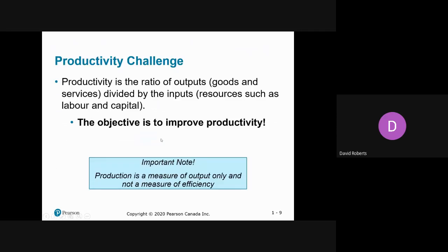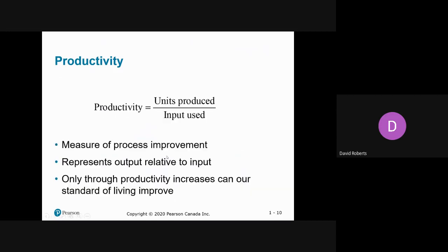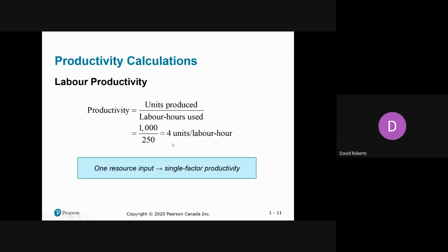The ratio of outputs divided by inputs is productivity, and you want to be more productive. For single-factor productivity, you simply take the number of units produced and divide it by the input. For example, if you produced 1,000 units and spent 250 labor hours, then every hour you produce four units. Your input could be machine hours or labor dollars — in this case, it is labor hours.